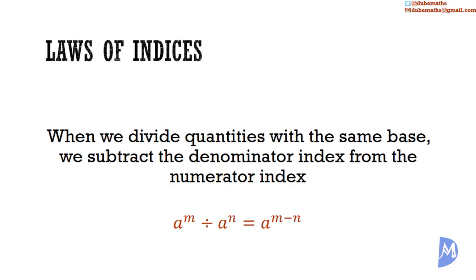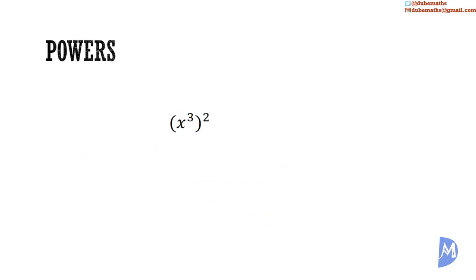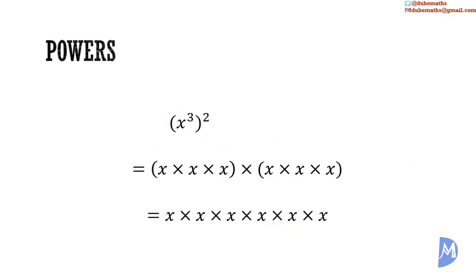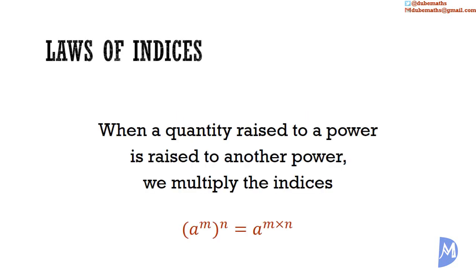We see that when we divide quantities with the same base, we subtract the denominator index from the numerator index. Consider x cubed all squared — that is x multiplied by x multiplied by x, multiplied by itself, which is x being multiplied 6 times: x to the 6th power. So x to the 3rd power all squared equals x to the 6th power. But 3 multiplied by 2 is equal to 6, so in general, when we raise the power of a quantity to another power, we multiply the indices.